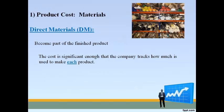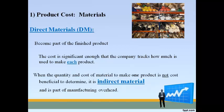Direct materials are the materials that become part of the product and cost enough to track how much is used to make one product. When it costs more to track material usage than the benefit of knowing that information, a company will not track it — those materials are called indirect materials. In order for a cost to be a direct cost, the company must be able to track how much is used and how much it costs to make each product.